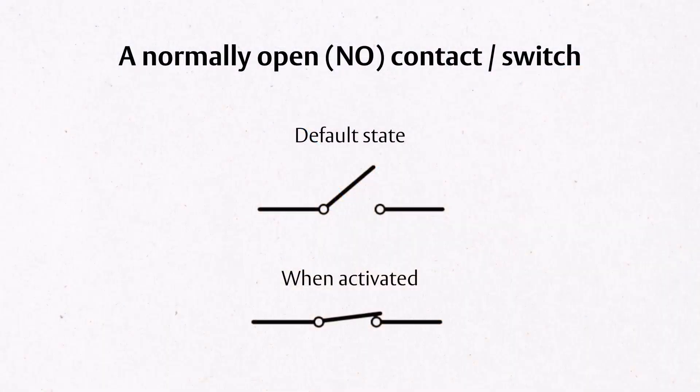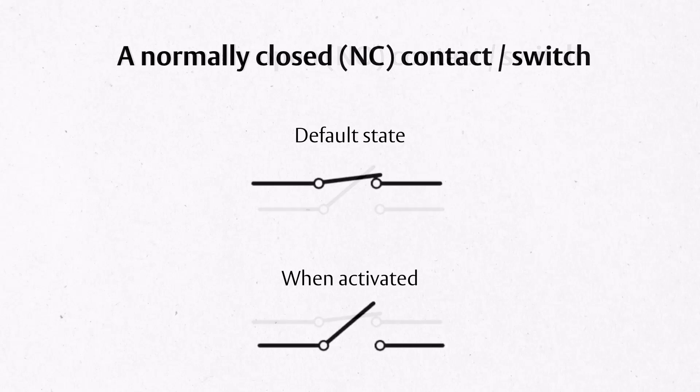To review, in a normally open circuit, the default state is off, and activating the switch turns it on. In a normally closed circuit, the default state is on, and activating the switch turns it off.